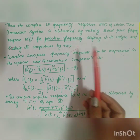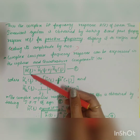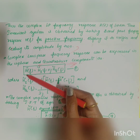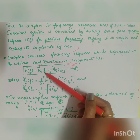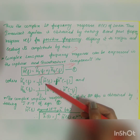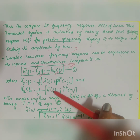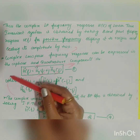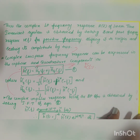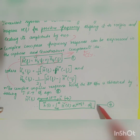As an alternative method, the complex low pass frequency response can be expressed in in-phase and quadrature components in Cartesian coordinates as: H̃(f) = H̃_I(f) + j·H̃_Q(f), where H̃_I(f) = (1/2)[H̃(f) + H̃*(−f)] and H̃_Q(f) = (1/2j)[H̃(f) − H̃*(−f)]. Taking the inverse Fourier transform gives: h̃(t) = ∫₋∞^∞ H̃(f)·e^(j2πft) df.